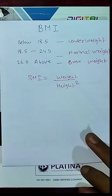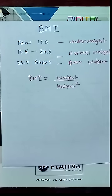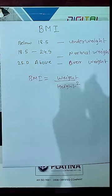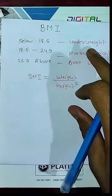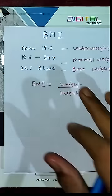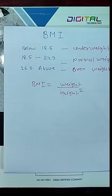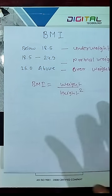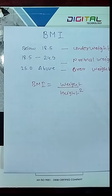Welcome everyone. In this video I'm going to explain what BMI is. There are three criteria: below 18.5 BMI you will be considered underweight, the range between 18.5 to 24.9 means you are in a normal weight condition, and if your BMI is more than 25 then you are overweight and need to work on your body.